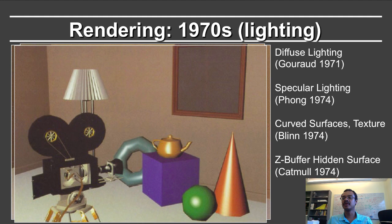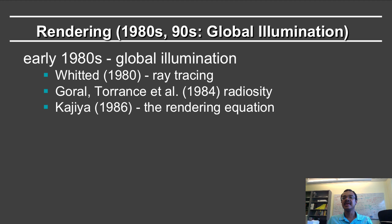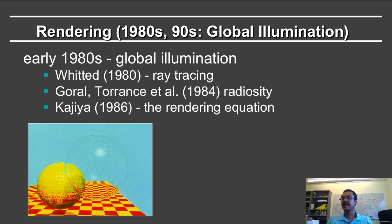Thereafter, Jim Blinn and colleagues did substantial work on curved surfaces and texture. In 1974, Ed Catmull introduced the Z-buffer — the hidden surface algorithm used nowadays in graphics cards. Those challenges having been solved, the next challenge in the 80s and 90s was what was known as global illumination. Turner Whitted in 1980 introduced the first recursive ray tracing algorithm — what you will implement in homework 3. Transport yourself back to 1980: suddenly you have a bubble refracting the surface, reflections and refractions, and this canonical image got many people excited that computer graphics could produce truly realistic imagery.